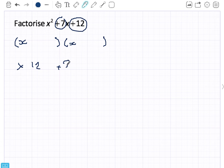The way to do this is basically to go through and think of a few numbers that multiply to give twelve. Such as twelve and one, but they don't make seven. Six and two, but they don't make seven. Four and three, they make seven. So I can put four in and I can put three in.